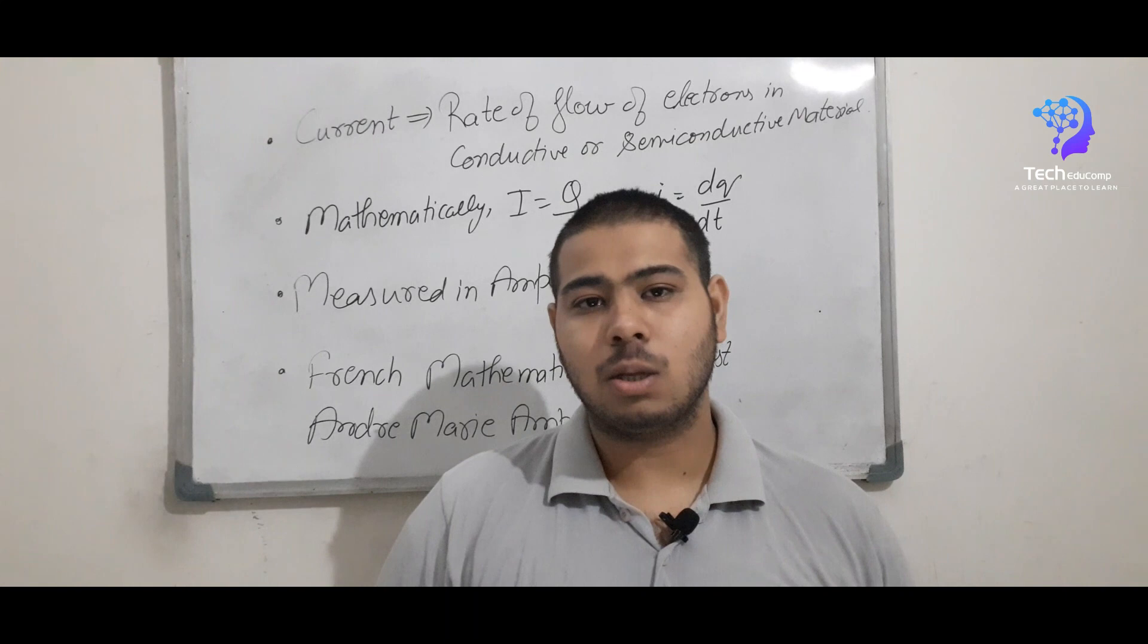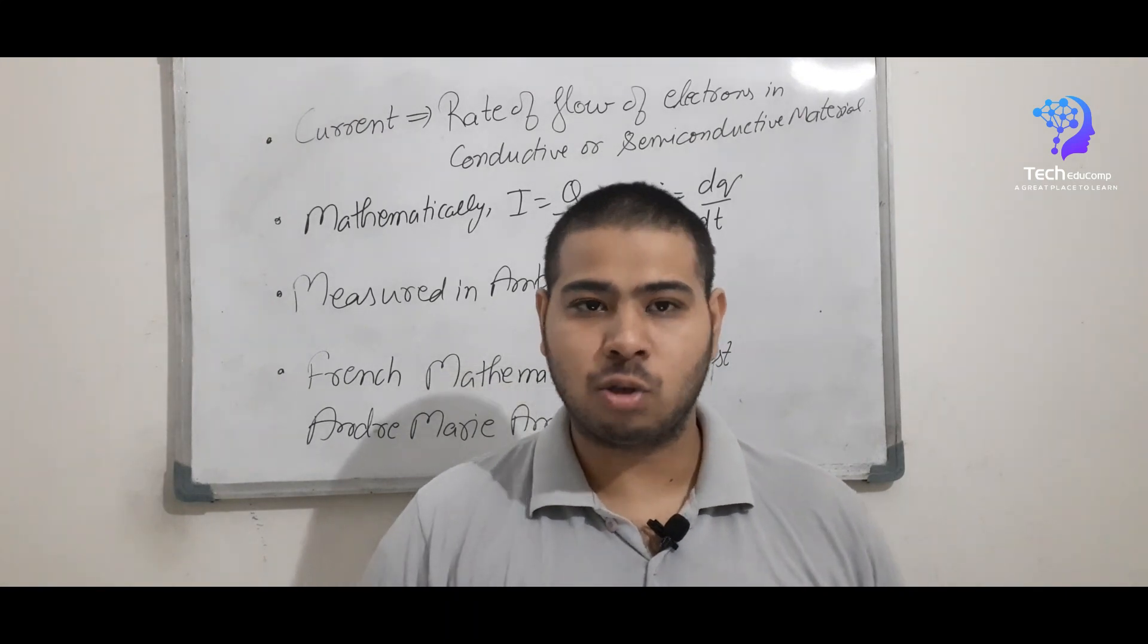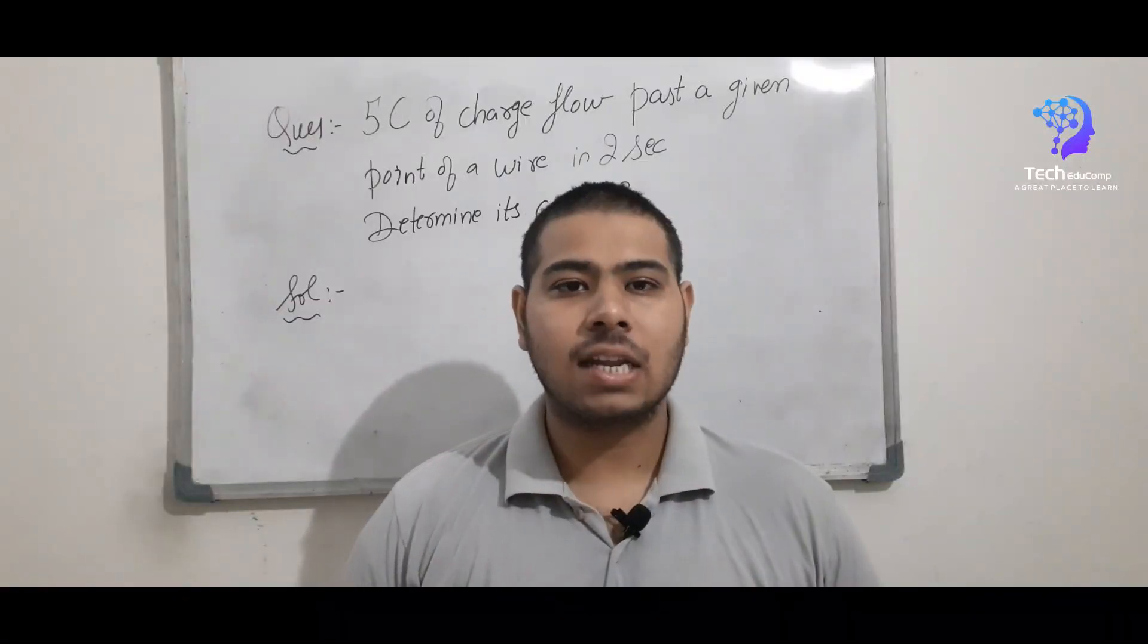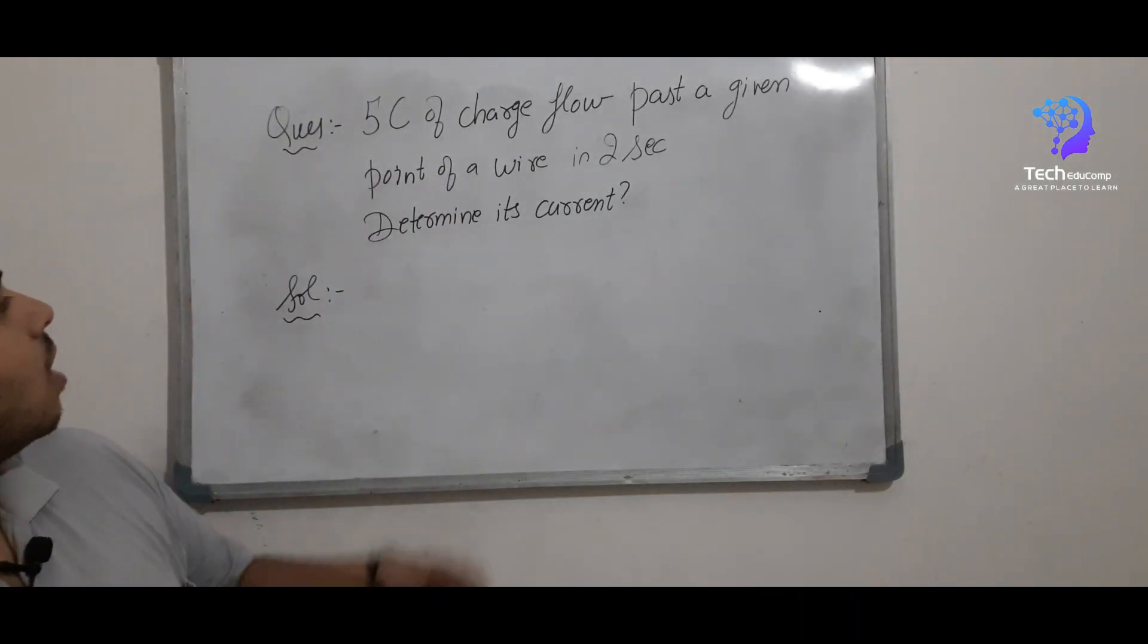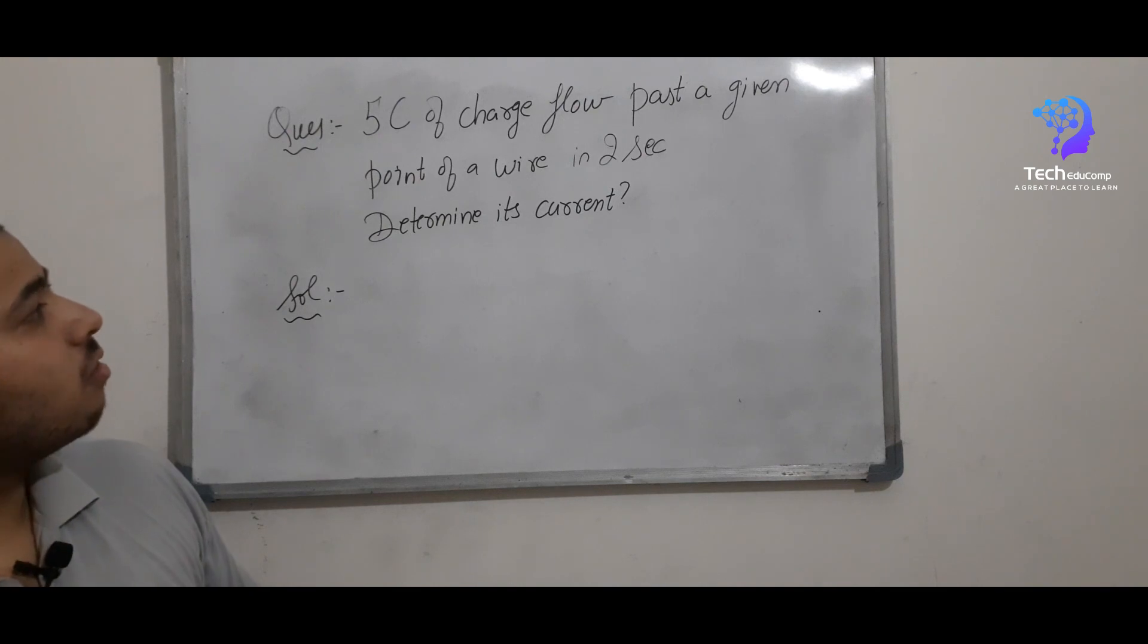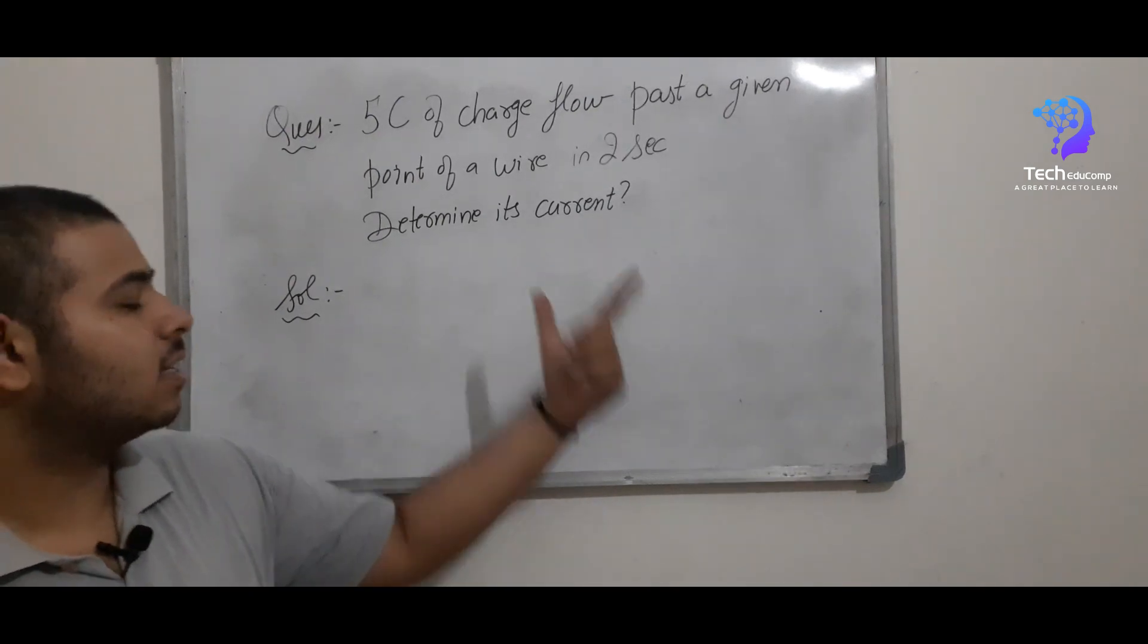So for this, we will take one question based on this topic. So now time for the question. So we have a question here. 5 coulomb of charge flow past a given point of wire in 2 seconds. Let us determine its current.